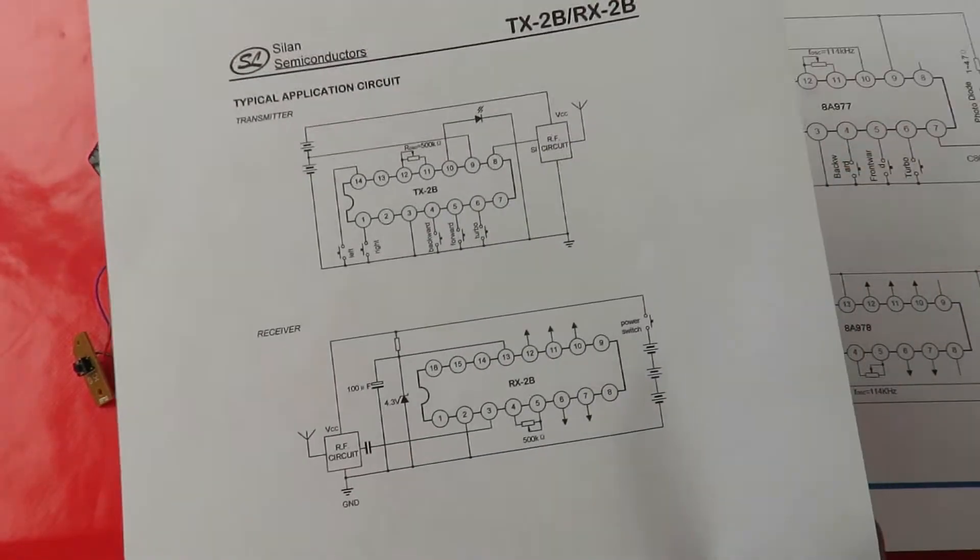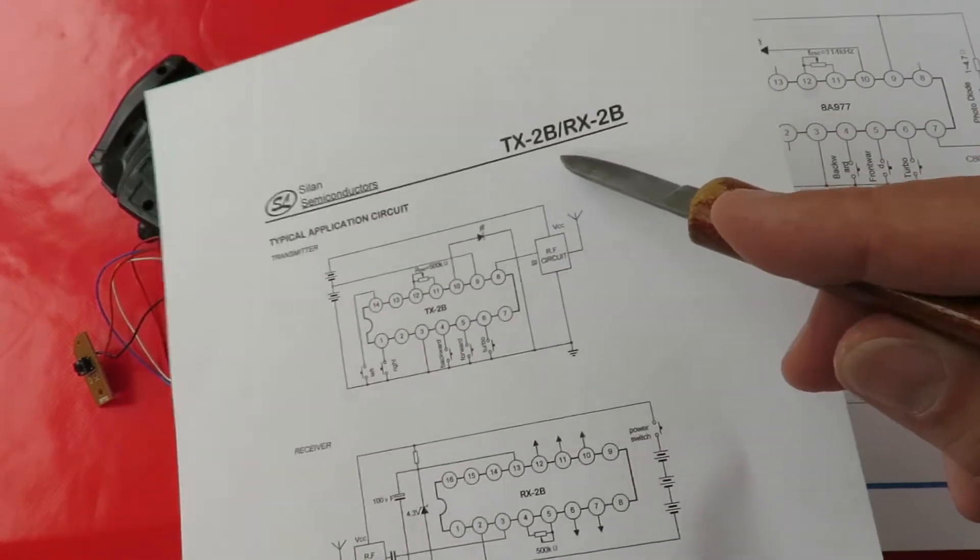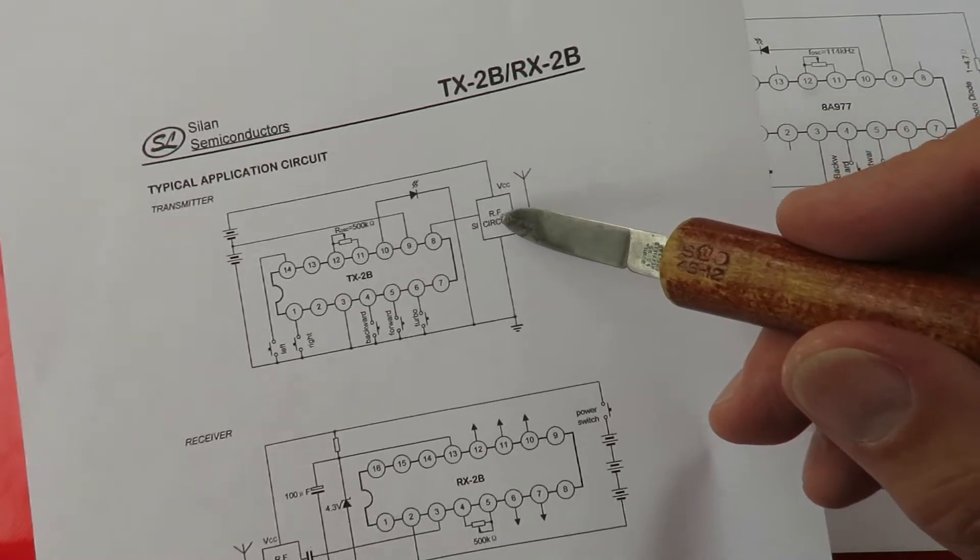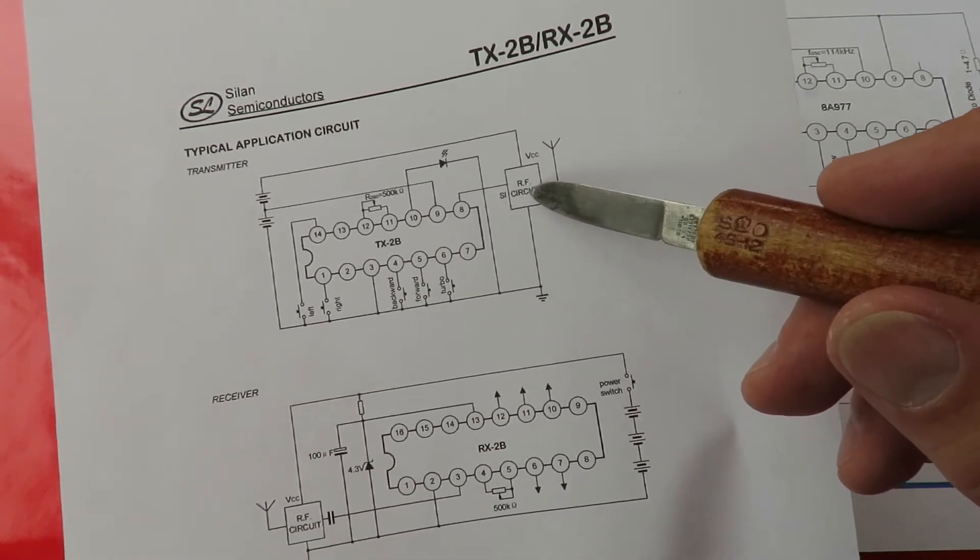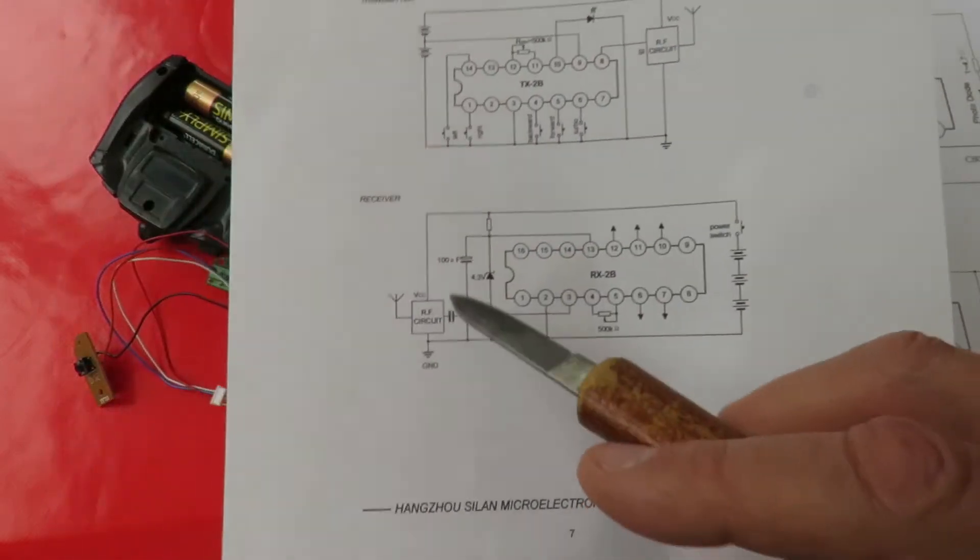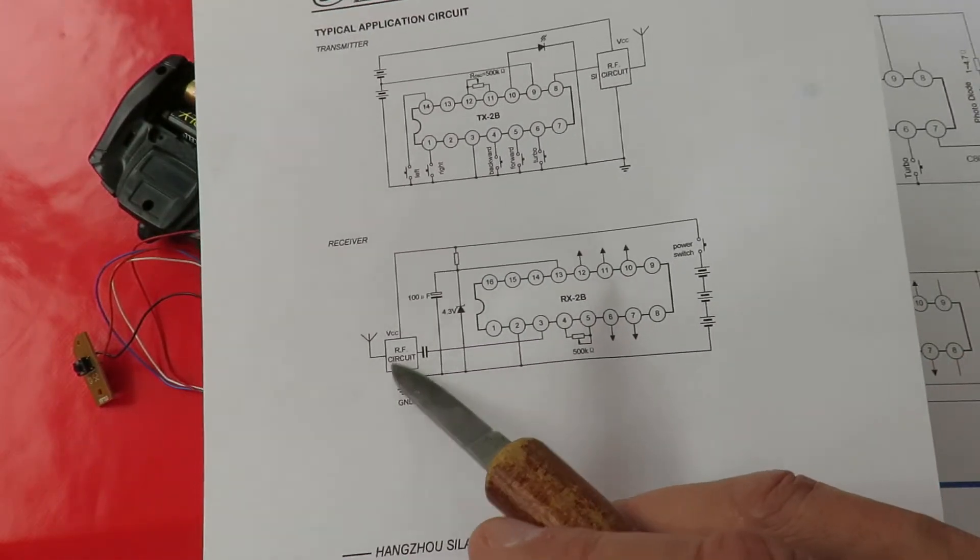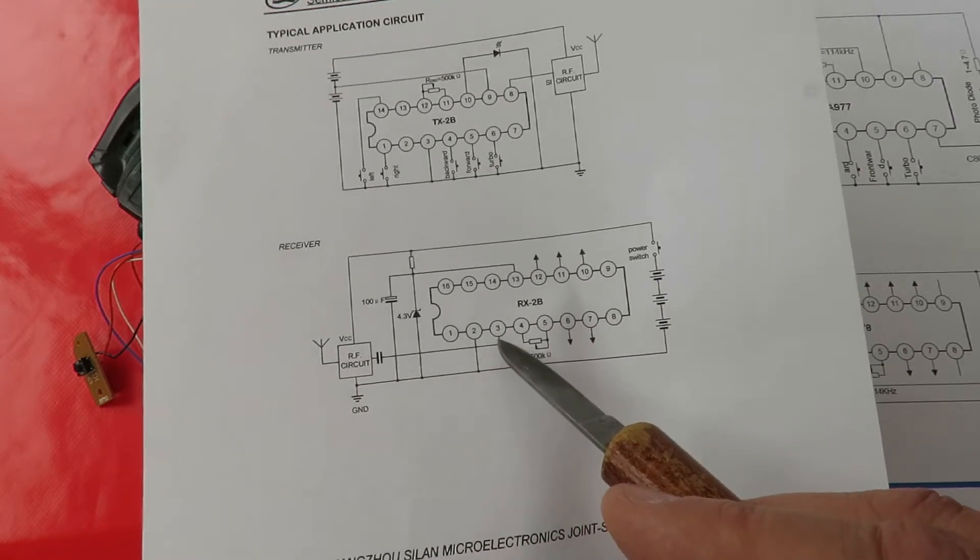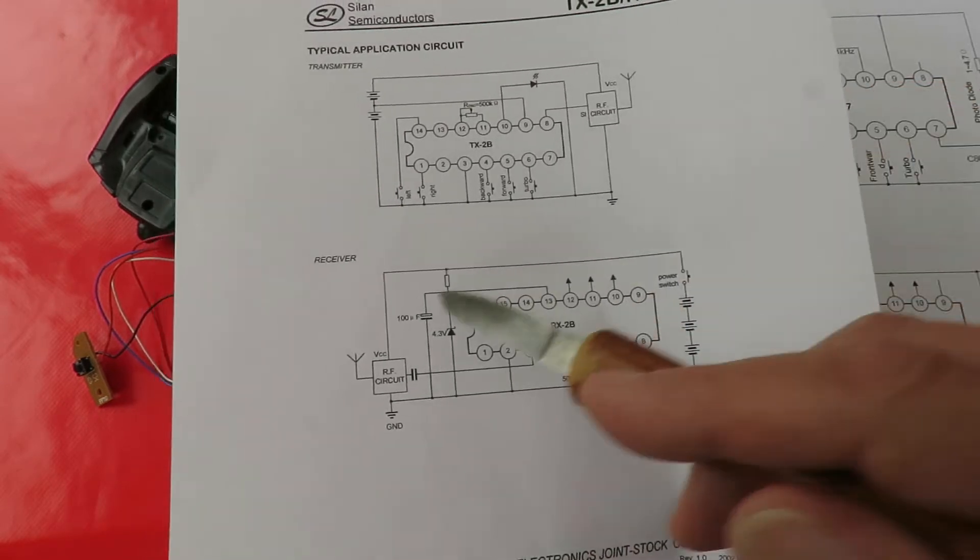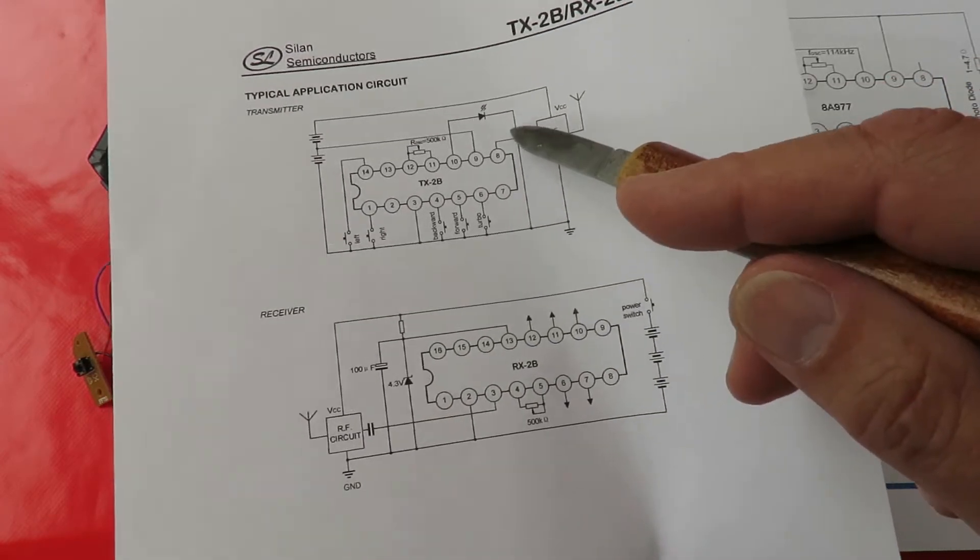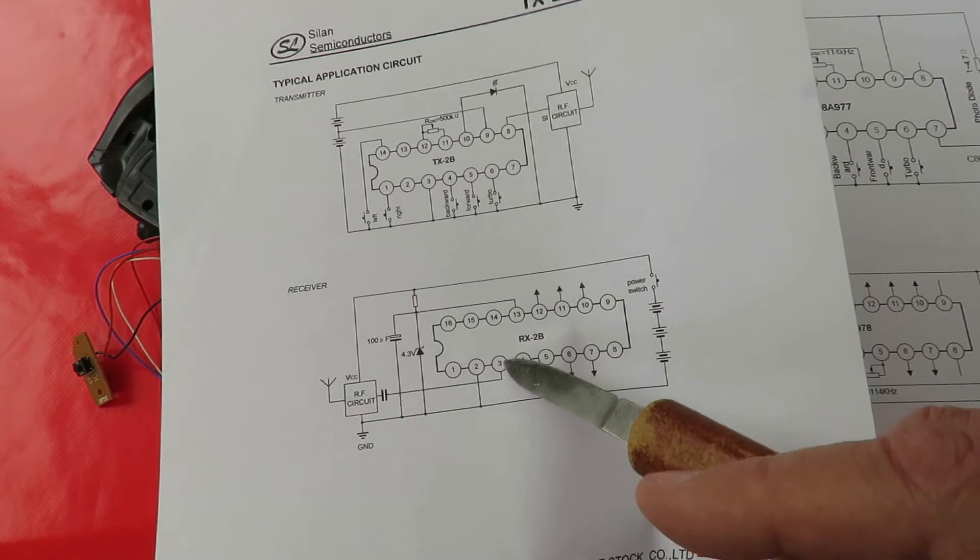So, if we use this one, which is the TX2B, pin 8 would normally go to your radio frequency circuitry. That's your transmit, goes out on pin 8. And then on the receiver, the radio frequency circuitry comes in on pin 3. So all we're doing is cutting out the radio frequency circuitry and going straight from 8 out to 3 in.